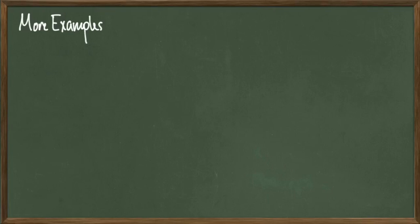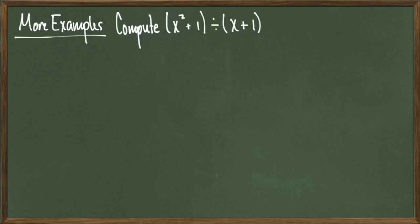And I've got one more example for you today. This one is a little bit unique. We're going to compute x squared plus 1 divided by x plus 1. Up until now, every time we've divided into a polynomial, that polynomial has had exponents that go down by 1 every single time.